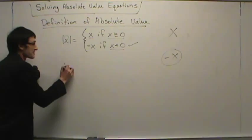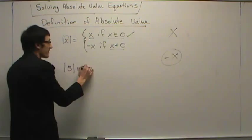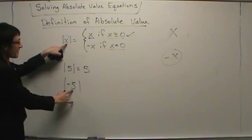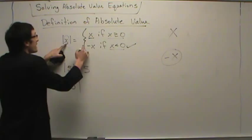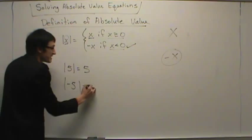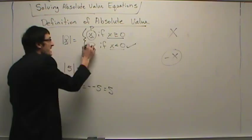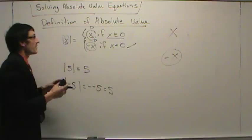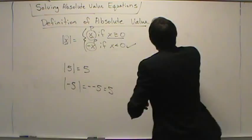Going back to the definition: absolute value of five — x is defined as five, which is positive, so we leave it alone. It's just five. Absolute value of negative five — x is negative five, which is negative, so we take the opposite: negative negative five equals positive five. So looking at this definition, x in the first case is positive — leave it alone. Negative x in the second case is also positive — take its opposite. Both outputs of the absolute value are positive.